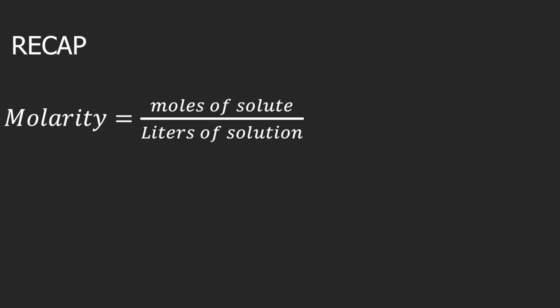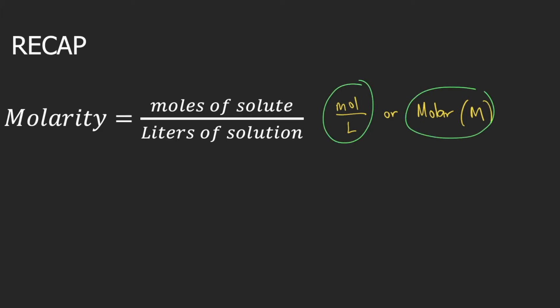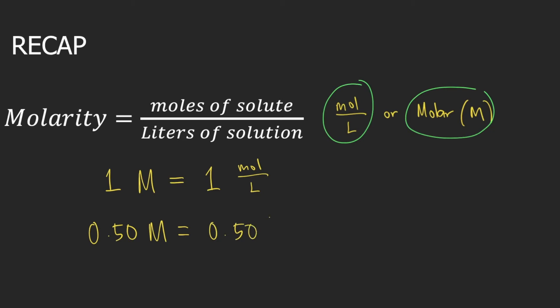Let's just have a quick recap. Molarity is equal to moles of solute divided by liters of solution, so the unit of molarity is moles per liter, also known as molar, and the symbol is capital M. Moles per liter and molar are just equivalent. For example, when I say one molar, that is just equivalent to one mole per liter. When you have 0.50 molar, this is just equivalent to 0.50 moles per liter. Remember this because we will use it in answering the succeeding questions.